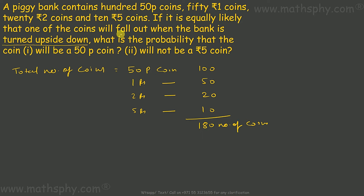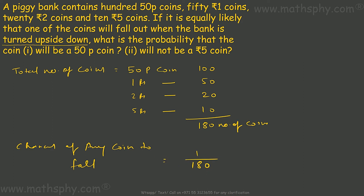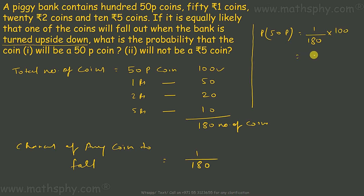Since it is equally likely that any one coin will fall out, the chance of any particular coin falling is 1 over 180. Now, the probability that the coin will be a 50-paisa coin: I have 100 fifty-paisa coins, so the probability equals 100 over 180, which simplifies to 5 over 9.